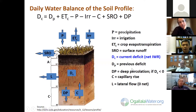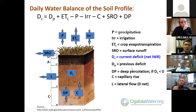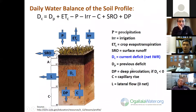Drawn in the root zone is the current deficit. What we want to track in irrigation scheduling is whether that deficit is zero — meaning the soil is at field capacity — or whether the deficit is past the management allowed depletion (MAD), which indicates that the plants are stressed.